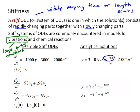It's got an exponent of negative 1000t, and another exponential function that's going to decay a lot slower with an exponent of negative t. So we have a very short time scale, or rapidly changing part, with a longer time scale, or slower changing part.